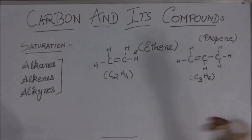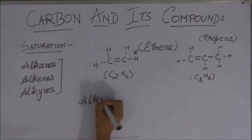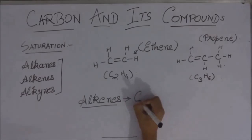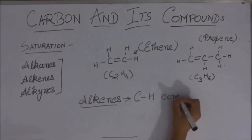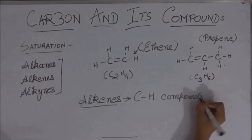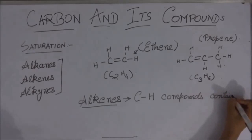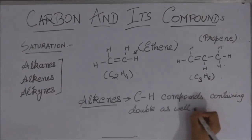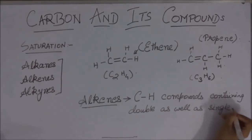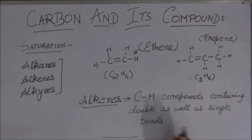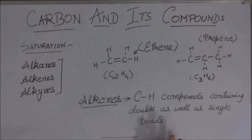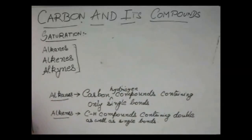We can define another class of carbon hydrogen compounds called alkenes. Alkenes are carbon hydrogen compounds containing double bonds as well as single bonds. They do contain double bonds and single bonds, but they do not contain triple bonds. Alkanes, by contrast, are the compounds which contain only single bonds.